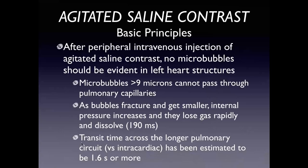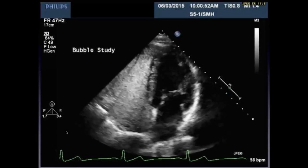Every now and then we'll see what I'd refer to as a stray bubble end up on the left side — that's a variant of normal and not indicative of a true AV malformation or interatrial shunt. After peripheral IV injection of agitated saline contrast in normal patients, no microbubbles should be evident in the left heart structures. Any structure greater than nine to ten microns cannot pass through pulmonary capillaries — they're too large, they'll plug and dissipate. Transit time across the pulmonary circuit is generally longer than intracardiac, estimated at about 1.6 seconds or more.